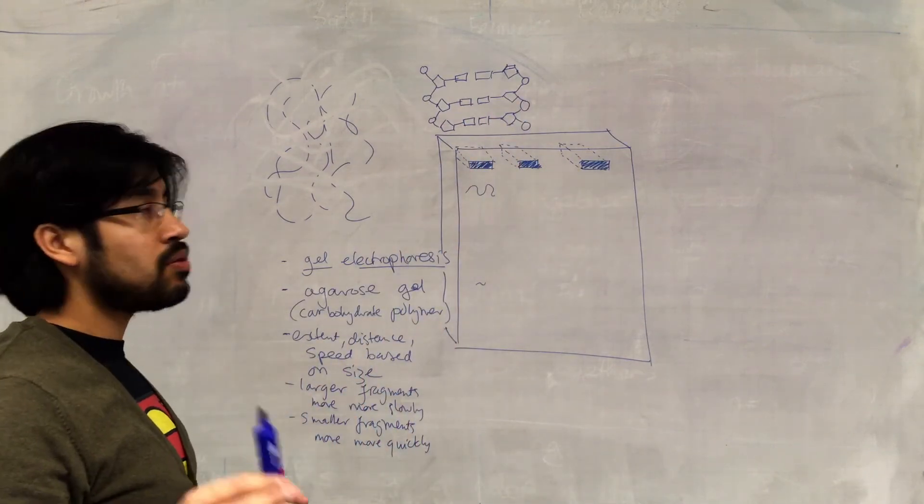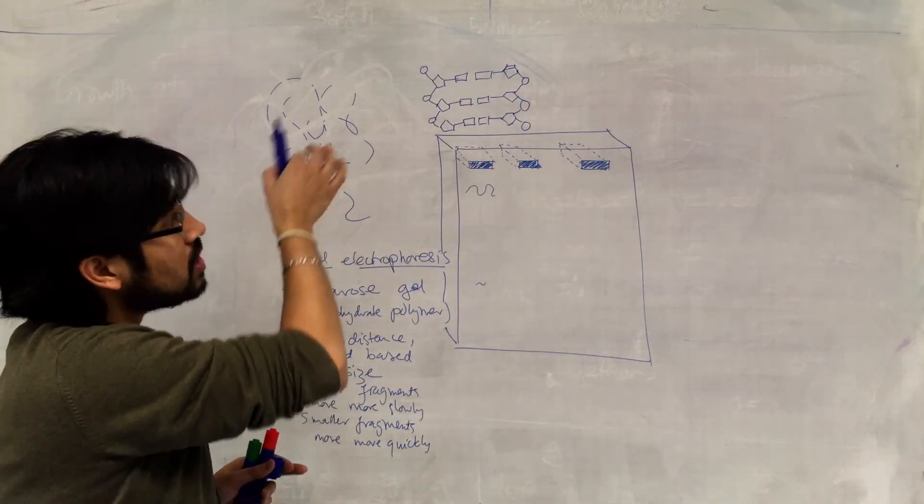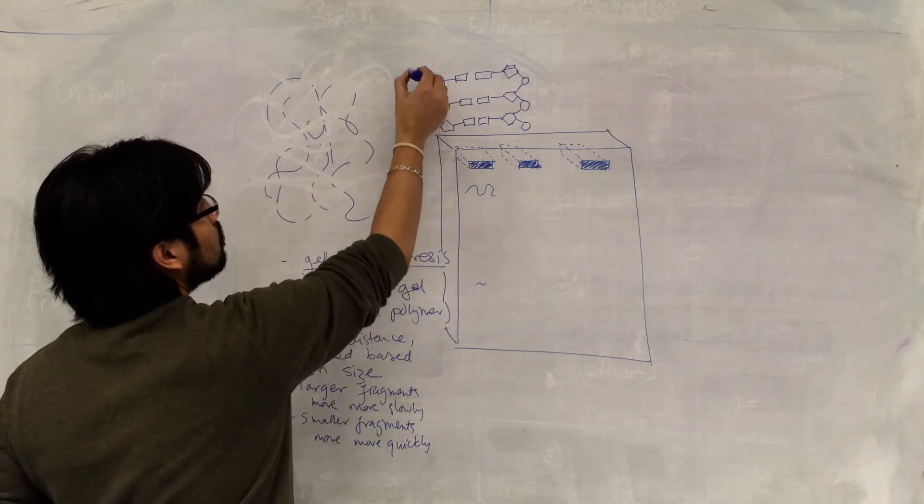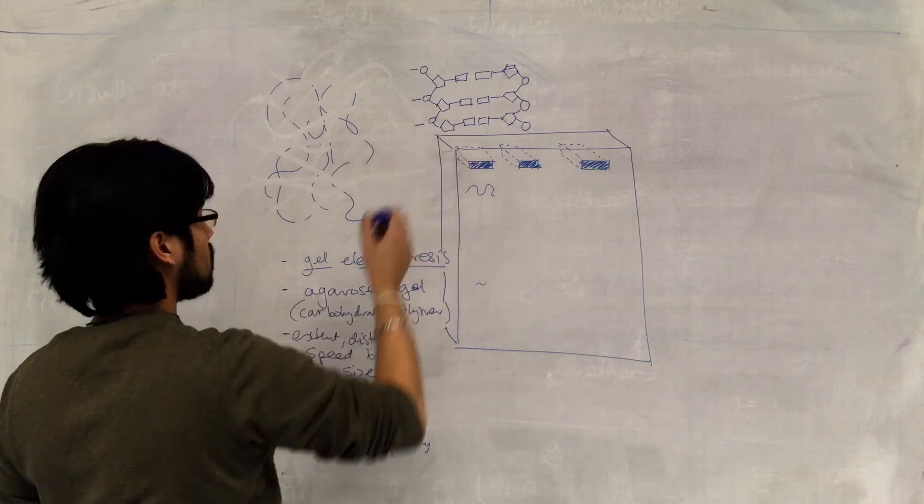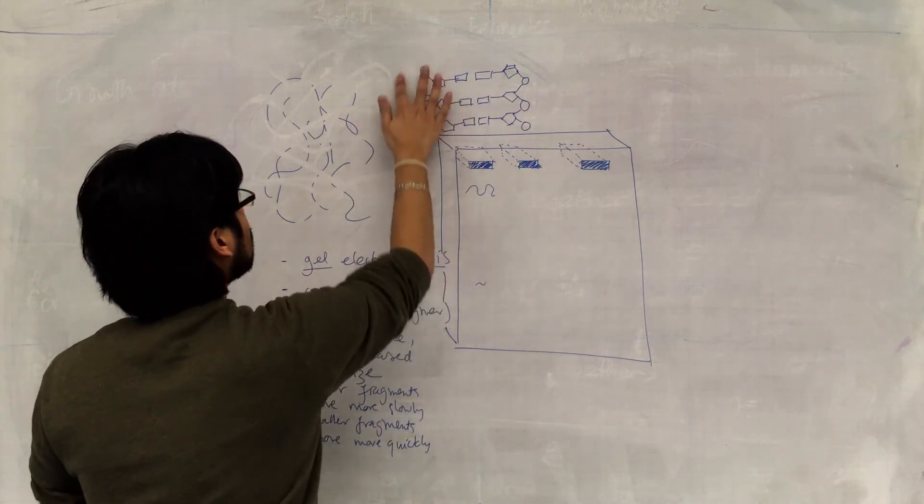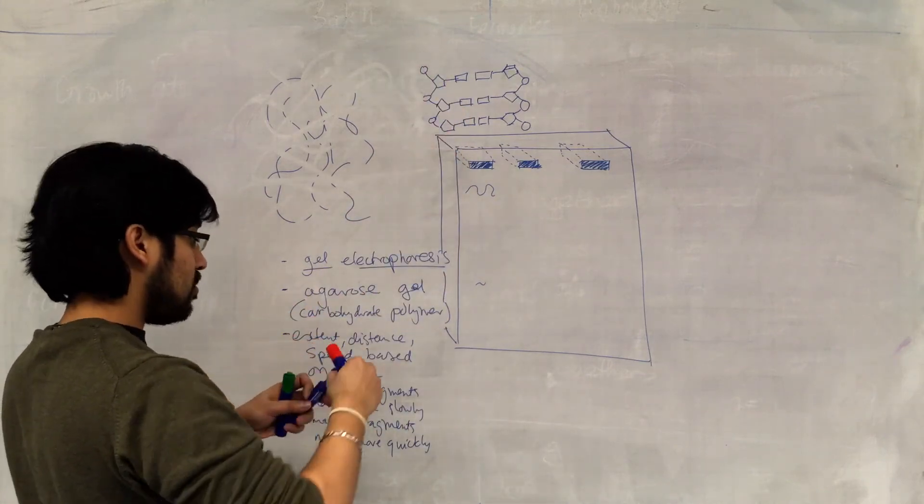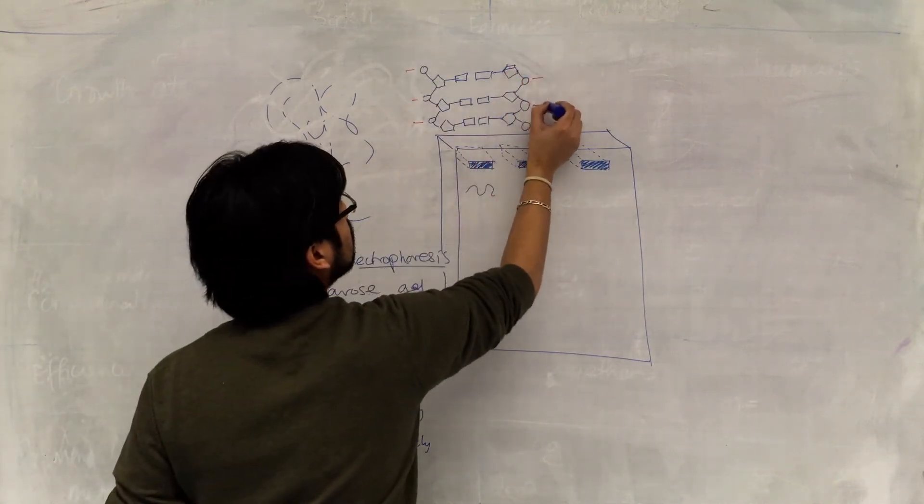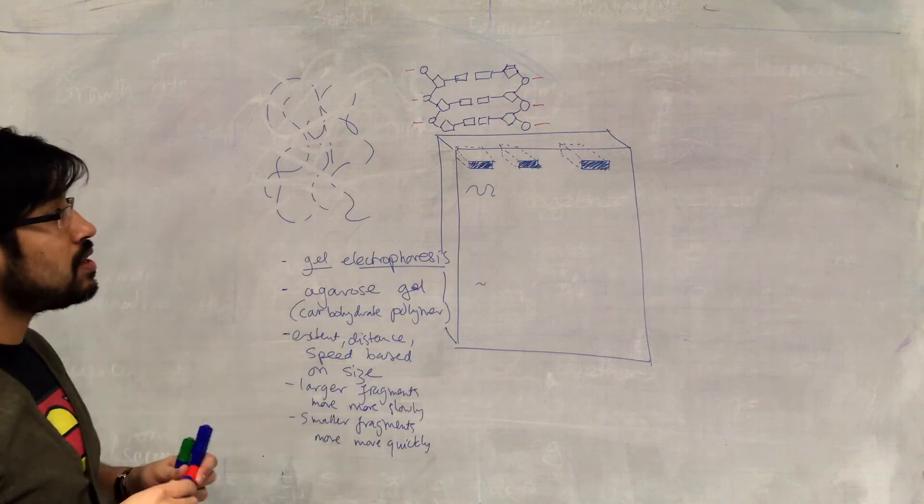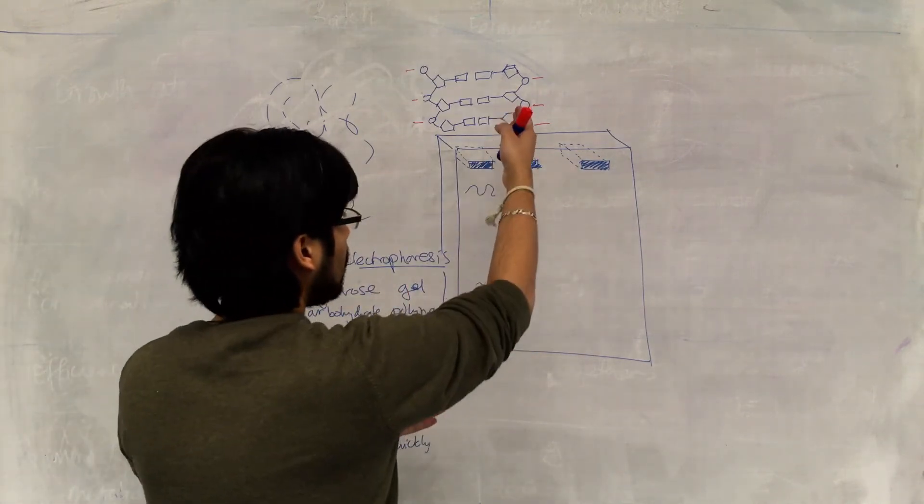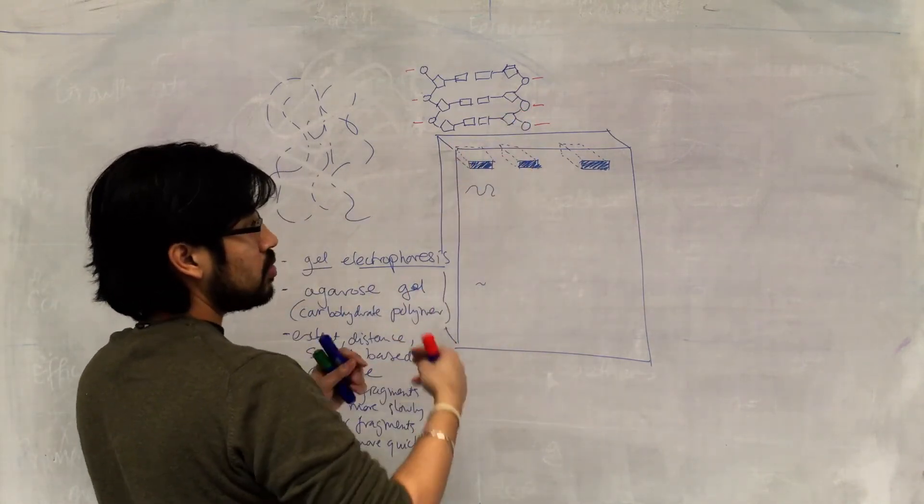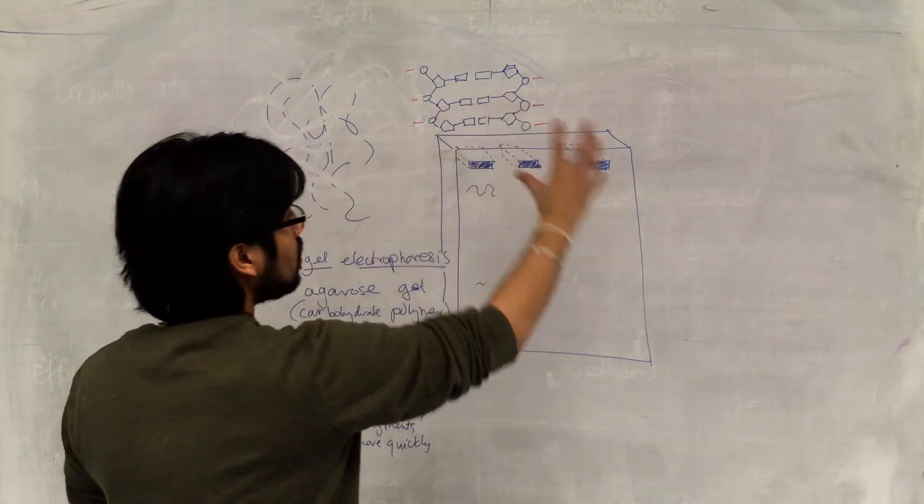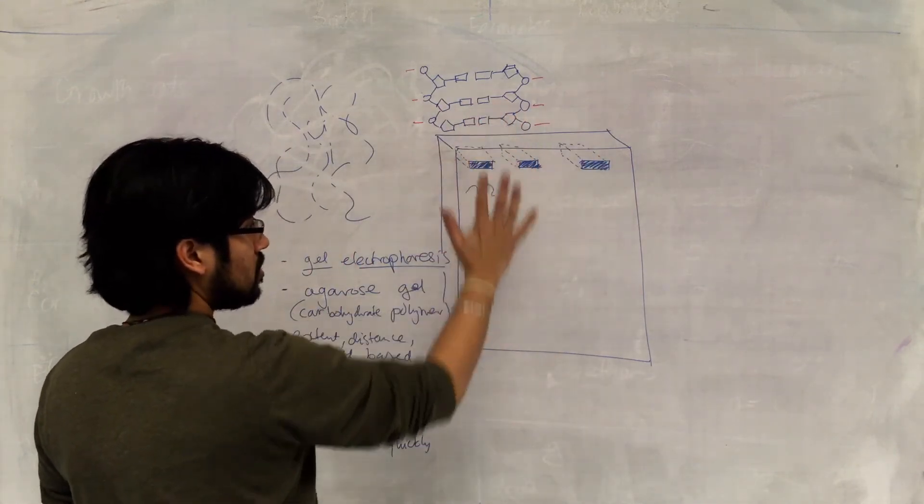Now, the important property or the important structural feature of the DNA here is the fact that these phosphate groups are very negatively charged. They are very negatively charged and we can take advantage of that in this method.